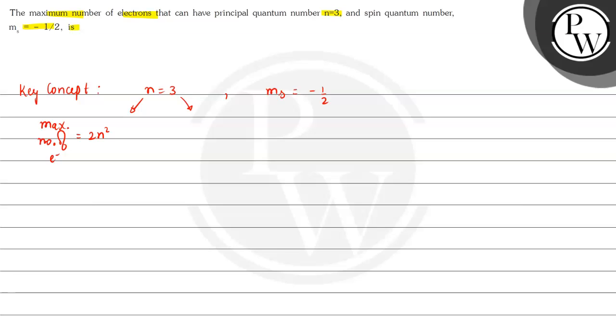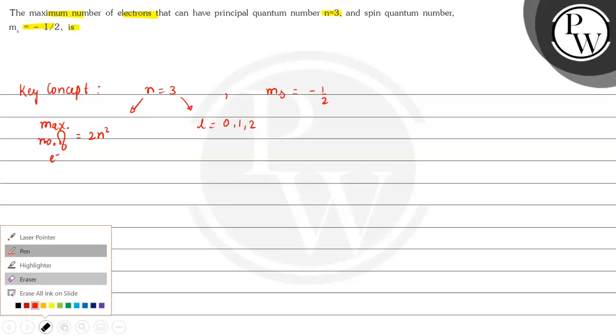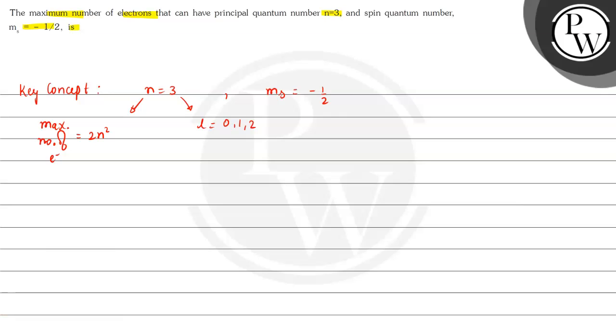when n equals 3 then l will be 0, 1 and 2 because as we know for a given value of n, l is equal to n minus 1, which means orbital. In this case these are 3s, 3p and 3d here.